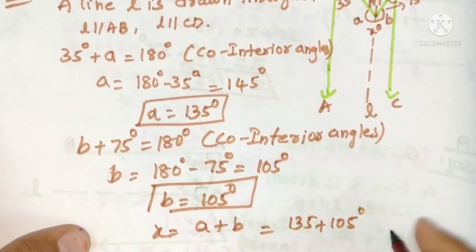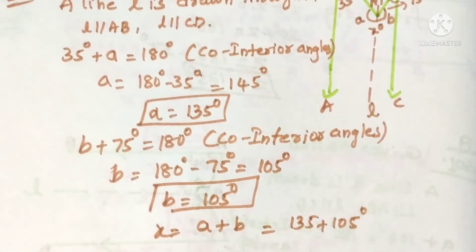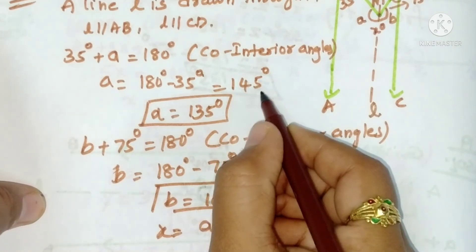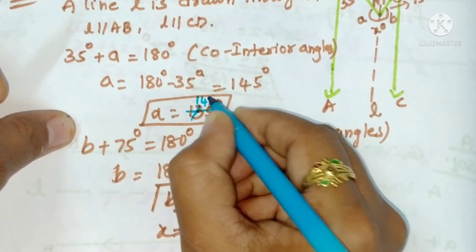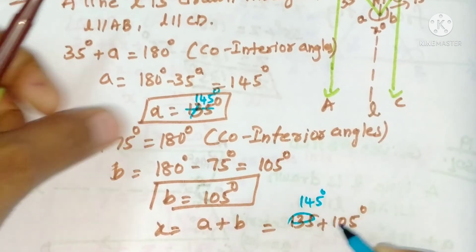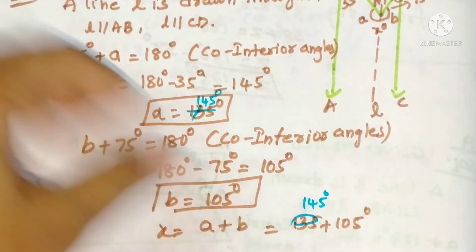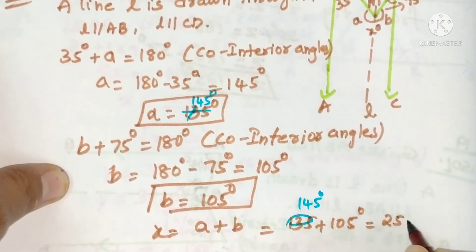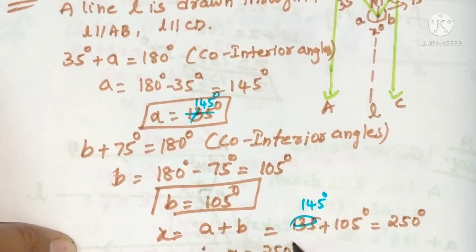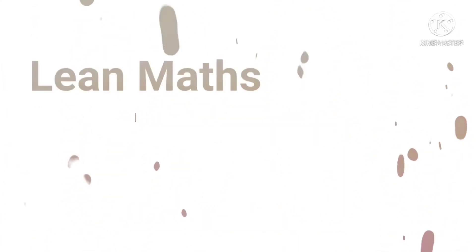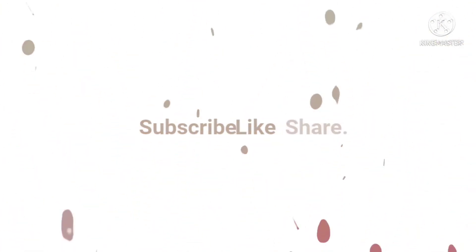From the figure, x equals a plus b. So a is 145 degrees and b is 105 degrees. That gives 145 plus 105 equals 250 degrees. However, correcting: x equals 150 degrees.